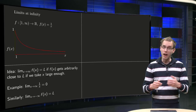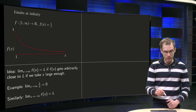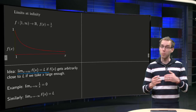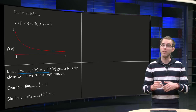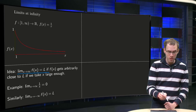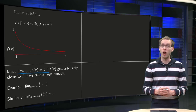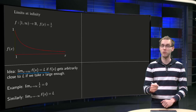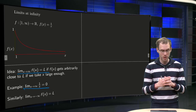The idea is: if f(x) becomes arbitrarily close to L, then we say the limit as x → ∞ of f(x) equals L. So in our example, if x becomes very large, we get closer and closer to 0 — we get arbitrarily close to 0 — which means that the limit as x → ∞ of 1/x equals 0.